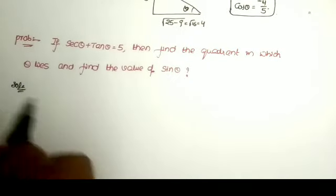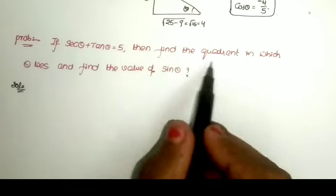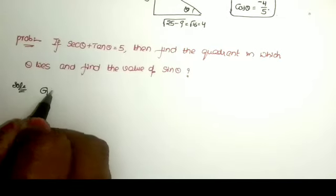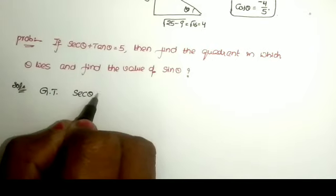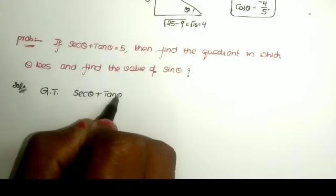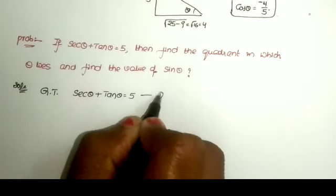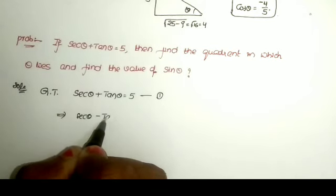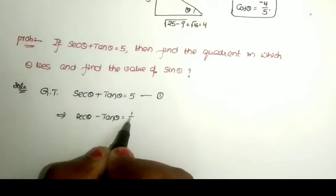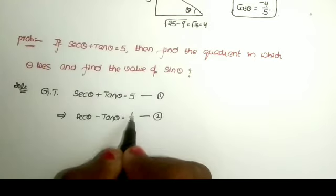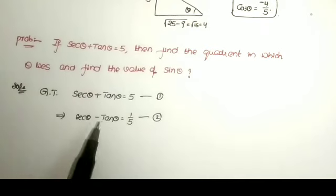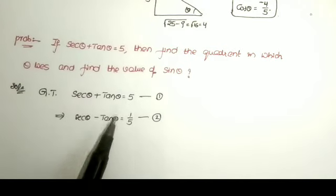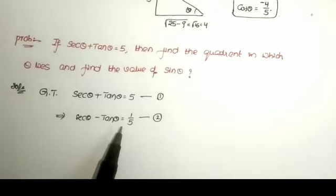The second question uses the same procedure. If secant theta plus tan theta is equal to 5, then find the quadrant in which theta lies and find the value of sine theta. The given equation is secant theta plus tan theta equals 5 — this is equation 1. By the direct formula, secant theta minus tan theta equals the reciprocal of 5, that is 1 by 5 — this is equation 2.